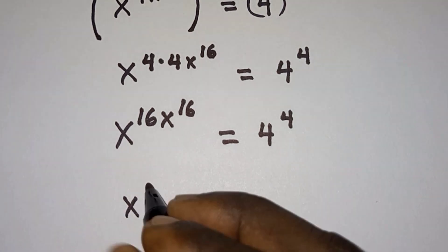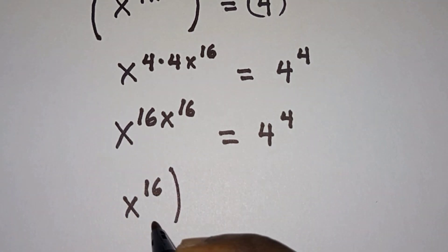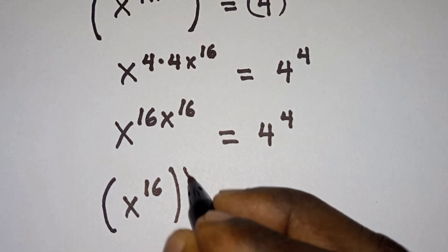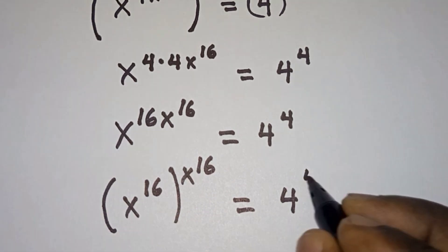And this could also be written as x to the power 16 to the power of x to the power 16, and this is equal to 4 to the power 4.